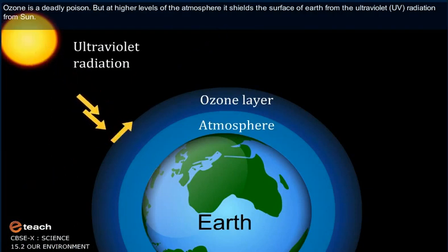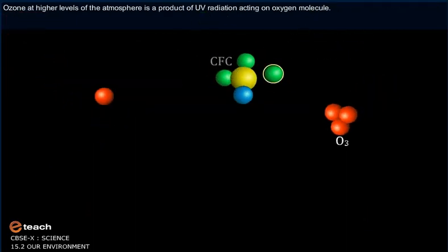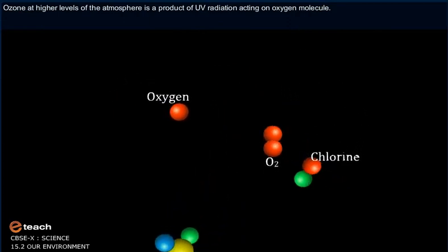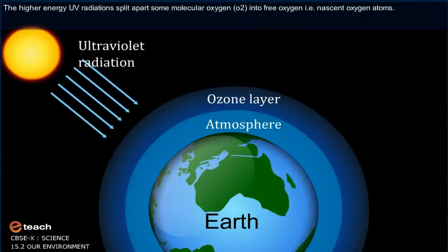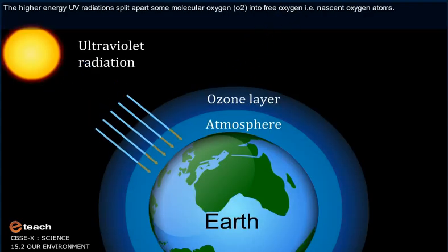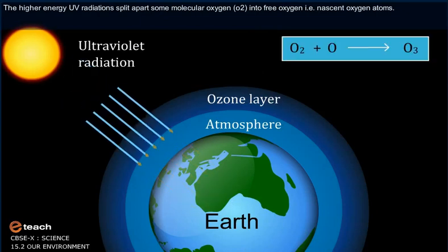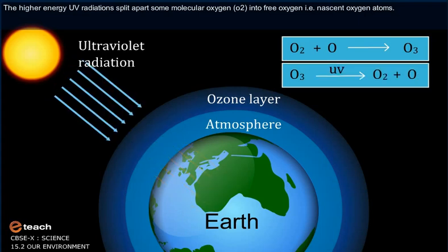It shields the surface of the earth from ultraviolet, that is UV, radiation from the sun. Ozone at the higher levels of the atmosphere is a product of UV radiation acting on oxygen O2 molecules. The higher energy UV radiations split apart some molecular oxygen, that is O2, into free oxygen, that is nascent oxygen atoms.